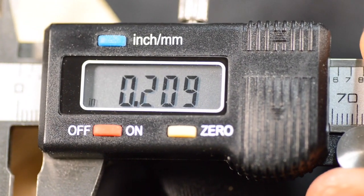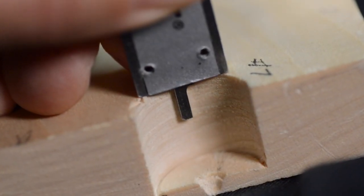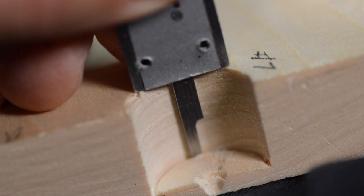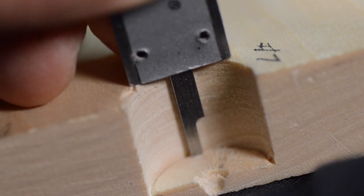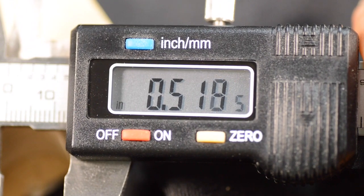To make a depth measurement, rest the end of the sliding ruler on the edge of the hole to measure. Slide the jaws open until the depth measuring blade gently contacts the bottom of the hole. Read the LCD screen.